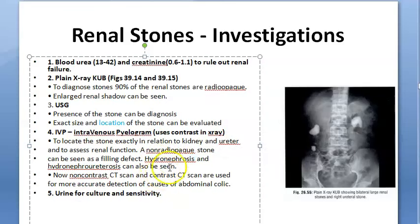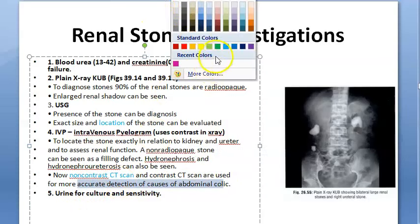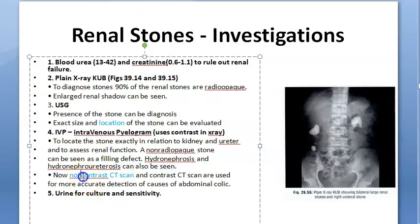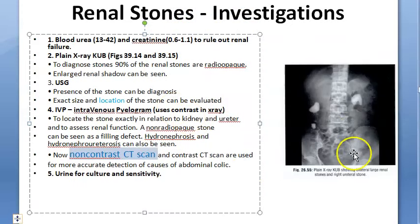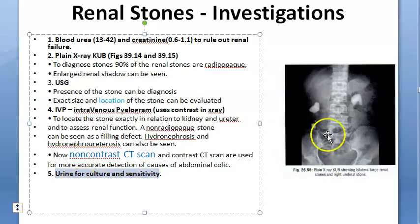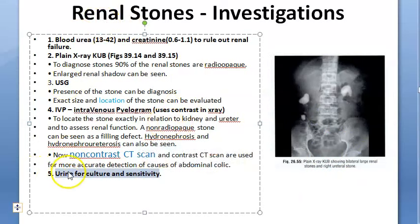Non-contrast CT and contrast CT scans are used for more accurate detection of causes of abdominal colic. Non-contrast CT scan is commonly used now — for example, at Manipal Hospitals in Bangalore. It is expensive, around 10,000 rupees. Urine culture and sensitivity should also be done to check for UTI.